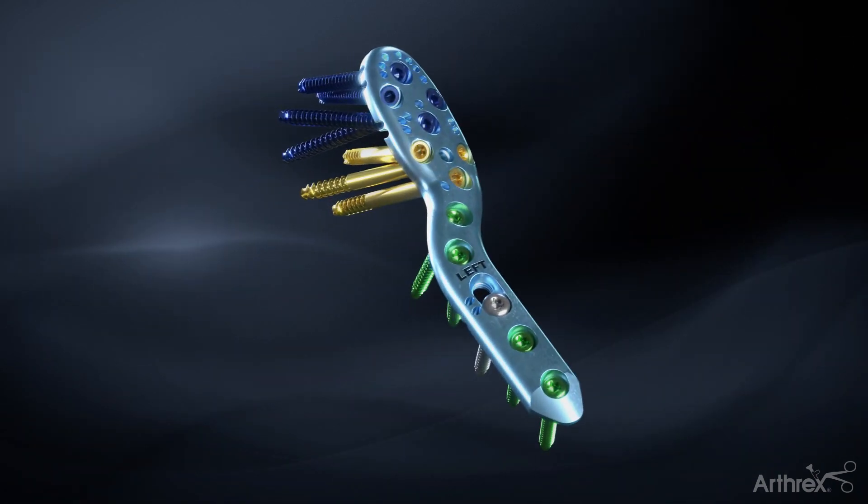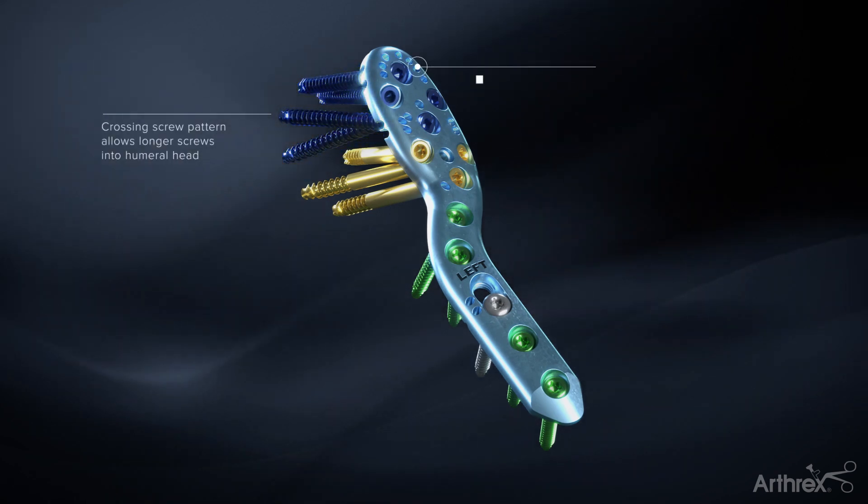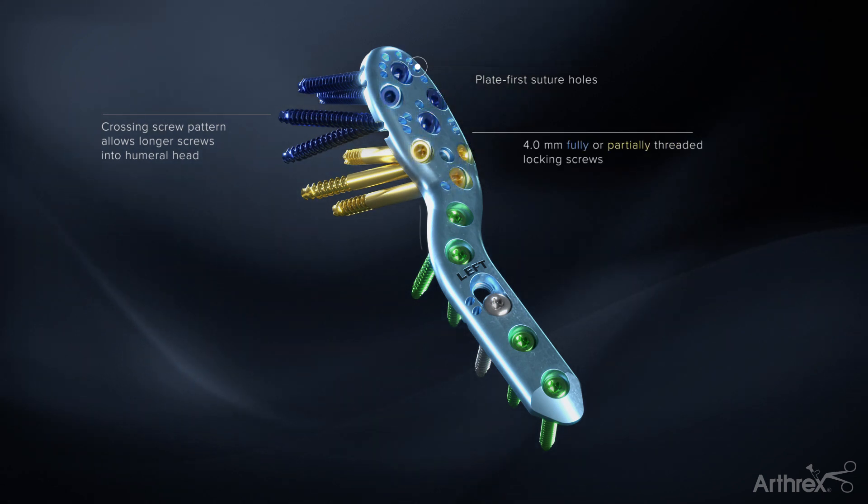The alpha plate is a unique side-specific anatomically designed option featuring crossing screws for added pullout strength, suture holes for cuff repair, and a choice of 4.0 millimeter fully or partially threaded locking screws proximally.